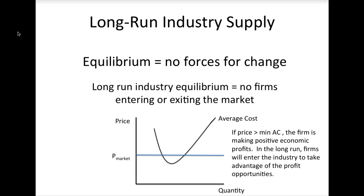Similarly, if the market price is greater than the minimum of average costs, then the firm is making positive economic profits. This means that the firm is more than covering its opportunity cost of doing business, and it is doing better by being in this industry than in some alternative industry. These profit opportunities will attract other firms to the industry as well, so this situation does not characterize a long-run equilibrium either.